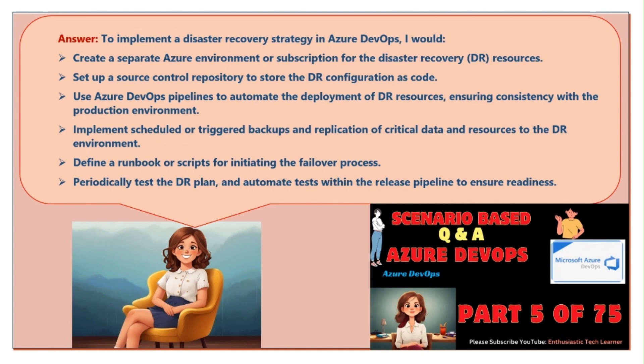Use Azure DevOps pipelines to automate the deployment of DR resources, ensuring consistency with the production environment. Implement scheduled or triggered backups and replication of critical data and resources to the DR environment. Define a runbook or scripts for initiating the failover process. Periodically test the DR plan and automate tests within the release pipeline to ensure readiness.